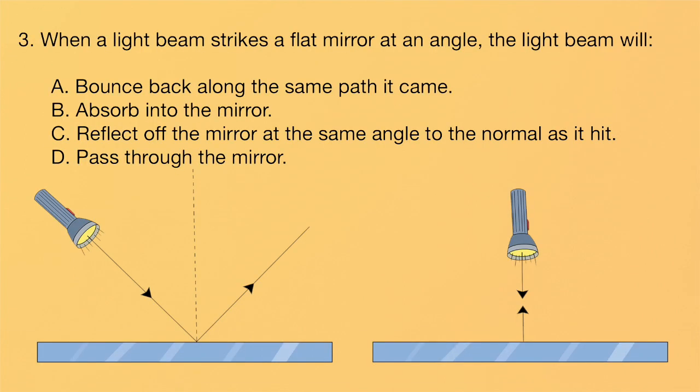Question three. When a light beam strikes a flat mirror at an angle, the light beam will A, bounce back along the same path it came, B, absorb into the mirror, C, reflect off the mirror at the same angle to the normal as it hit, or D, pass through the mirror.